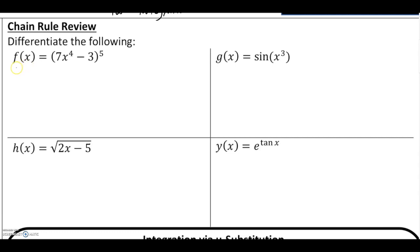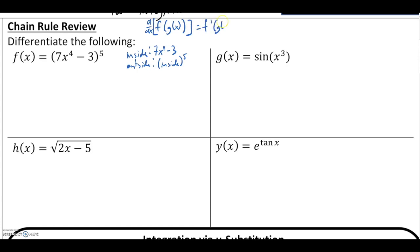Looking at the first example, we have a function f of x defined as the quantity 7x to the fourth minus 3, all raised to the fifth power. For the chain rule, what we identified was an inside function — in this case 7x to the fourth minus 3 — being raised to the fifth power, which is the outside function. We're differentiating a composite function, so chain rule says: differentiate the outside function and multiply by the derivative of the inside function.